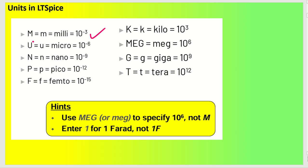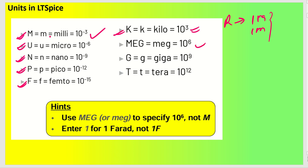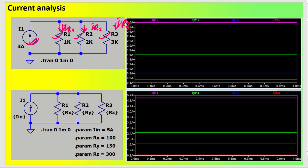Whether you write capital M or small m, both represent milli - so 1M or 1m means 1 milliohm, not 1 megaohm. Capital or small k both mean kilo. To use mega, you write MEG or meg. Similarly, G or g means giga, T means tera, u for micro, n for nano, p for pico, and f for femto. This is the key unit convention you need to understand in LTSPICE.